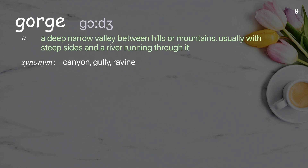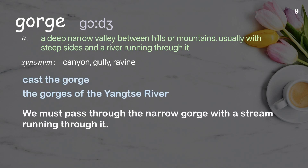Gorge: a deep, narrow valley between hills or mountains, usually with steep sides and a river running through it. Examples: cast the gorge; the gorges of the Yonsei River. We must pass through the narrow gorge with a stream running through it.